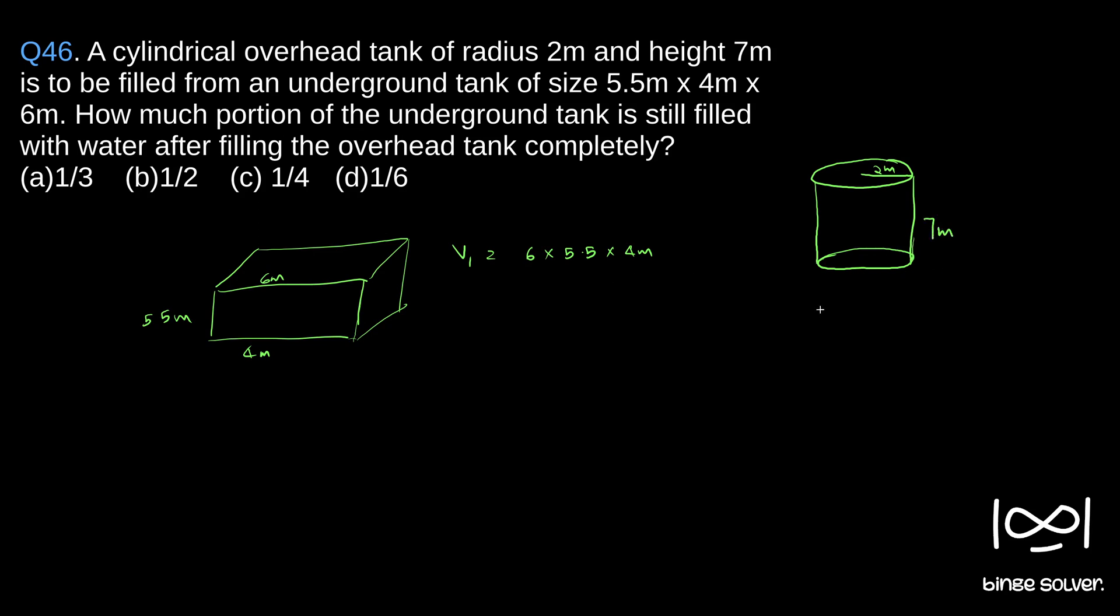the volume? Volume of a cylinder is given by V2 = π r² h. π r² is the area of the circle, and height will give the volume. So π r² h, which is 22/7 (the value of π) × r² (2² = 4) × h (7 meters). So